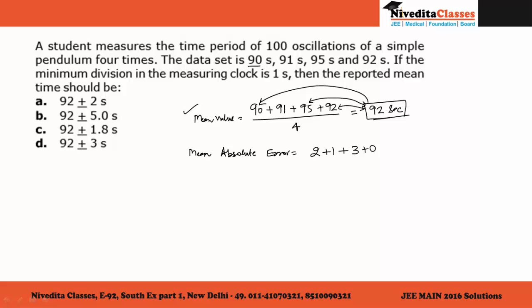When we take the mean, we add all the absolute errors and divide by the number of observations. So we get 1.5 seconds. Now this has to be rounded off to 2 seconds.